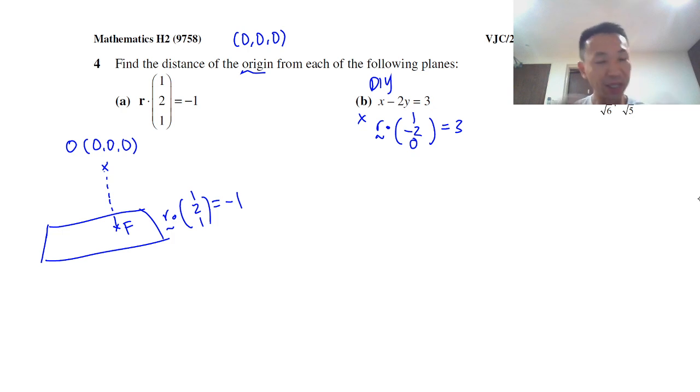How do we do this? We will say, okay, let us have a point A that lies on the plane. Let's have this point A—it can be, say for example, (-1,0,0). There are a lot of other points that lie on the plane.